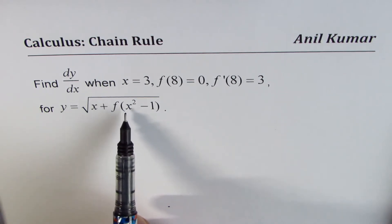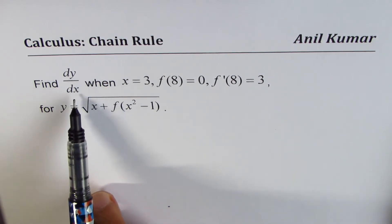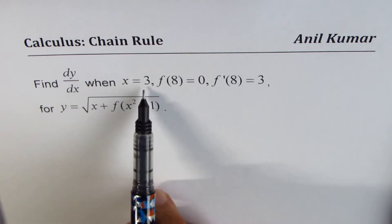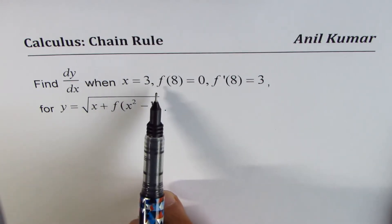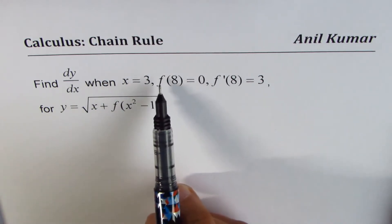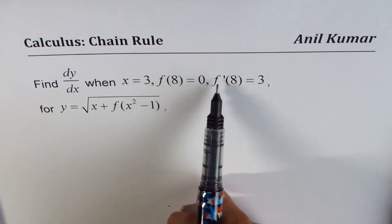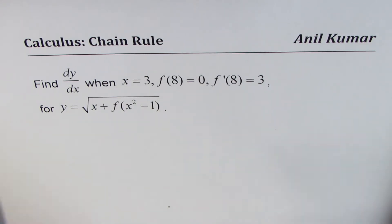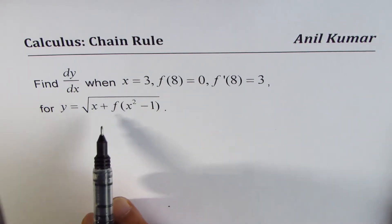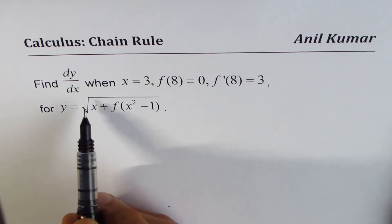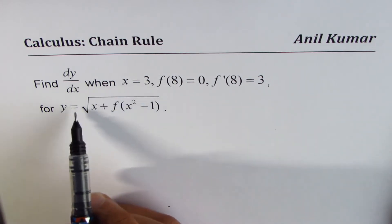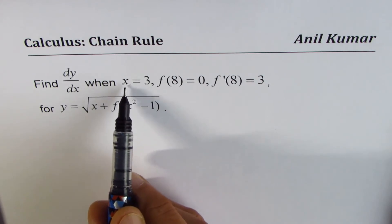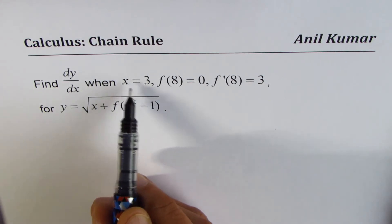For this function, we need to find the derivative dy/dx when x is 3. We are given that f(8) equals 0 and f′(8) equals 3. In such questions, it's a good idea to first find the value of whatever is inside the function at the point of interest, which is x equals 3.